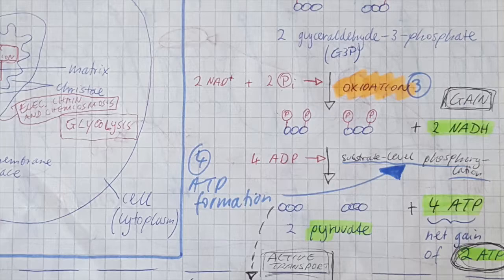The fourth and last step of glycolysis is ATP formation — specifically, it's called substrate-level phosphorylation. We're going to take the phosphate groups added to the three-carbon sugars and put them on adenosine diphosphate molecules, creating adenosine triphosphate or ATP. We create four ATP here, but because we expended two ATP at the very beginning for the phosphorylation of glucose, we have a net gain of two ATP molecules. We've also gained two NADH, and we have our two three-carbon sugars, which we now call pyruvate molecules.